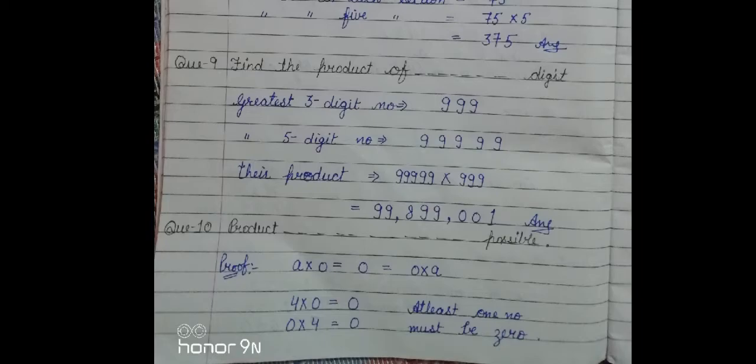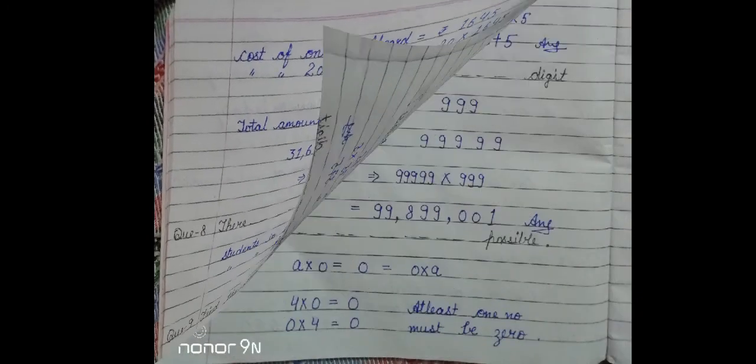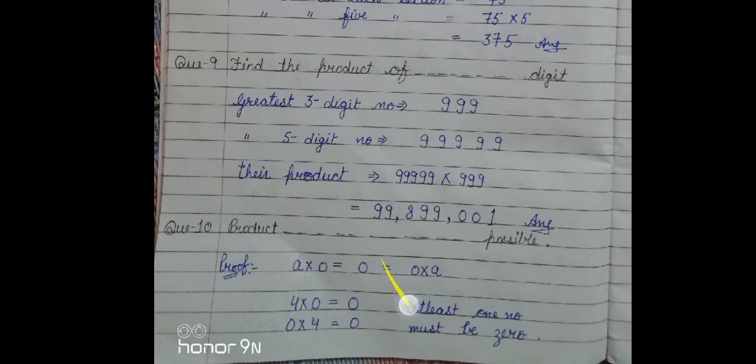Tenth question. Find the product of whole number is zero. How can it be possible? It must have at least one number, zero. You can multiply zero with any number. So, what will be possible? Zero. Zero multiply two will give zero. Any number multiply zero will give zero.